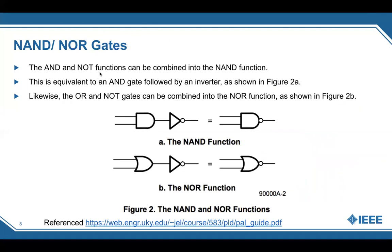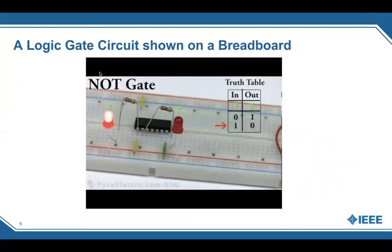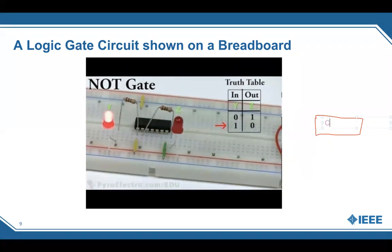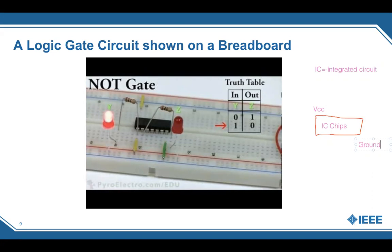Now I'm going to get into a logic gate circuit shown on the breadboard — how you can implement this in real life and see the result. You'll often have to deal with, while breadboarding, these little chips called IC chips. IC stands for integrated circuit. The gates are happening within this chip. Within the chip, you have to have a power supply — usually called VCC — and then there's a ground, usually the bottom right pin. There are about seven pins on each side.